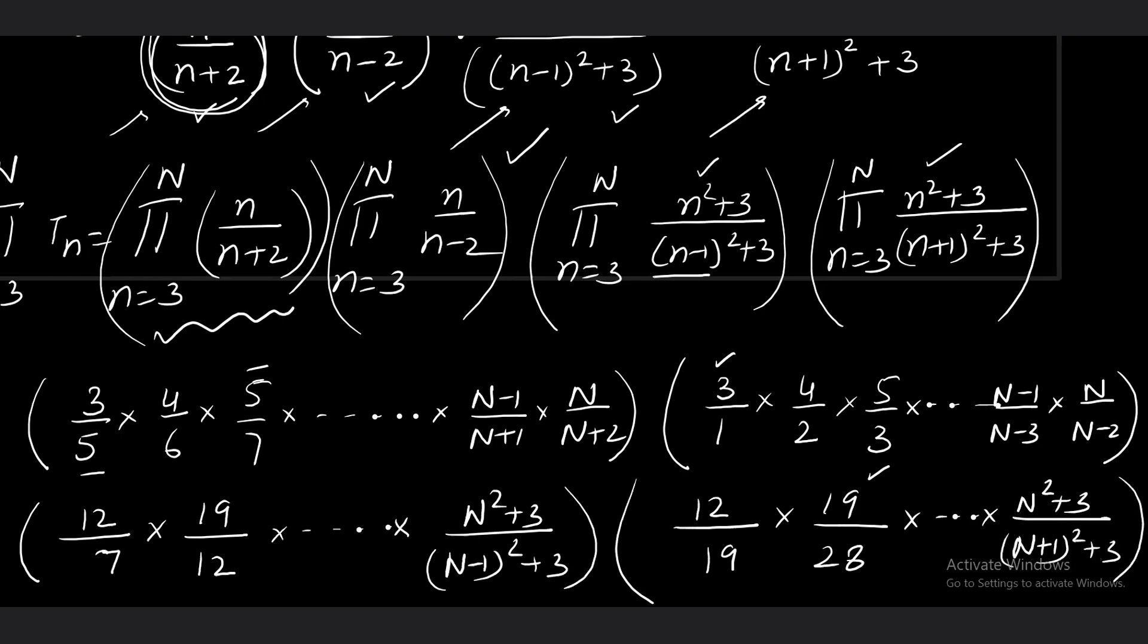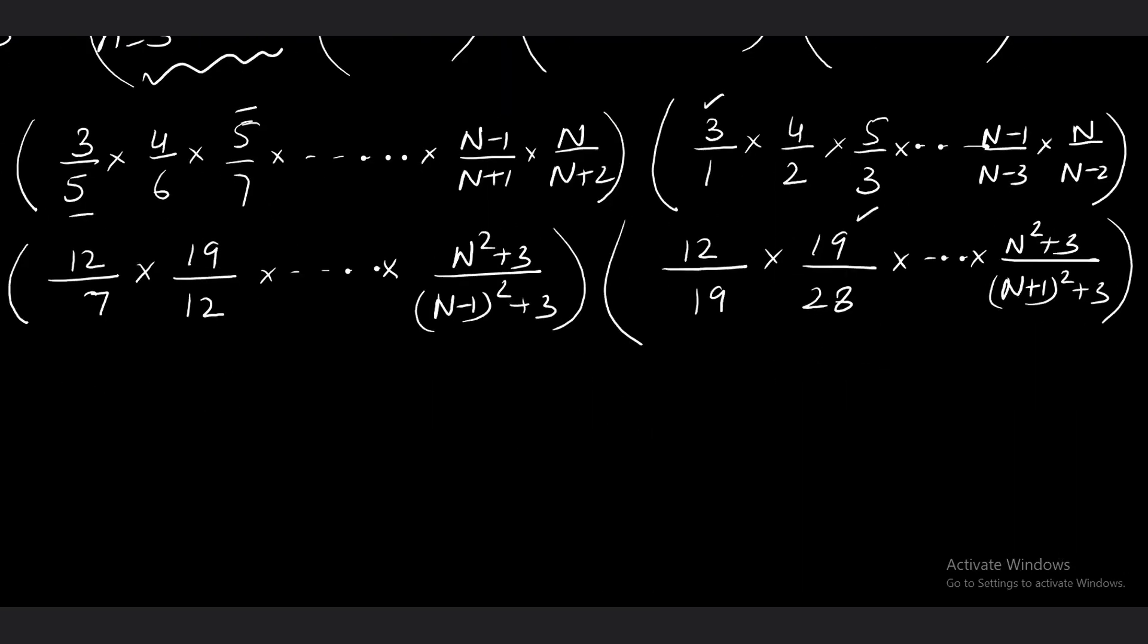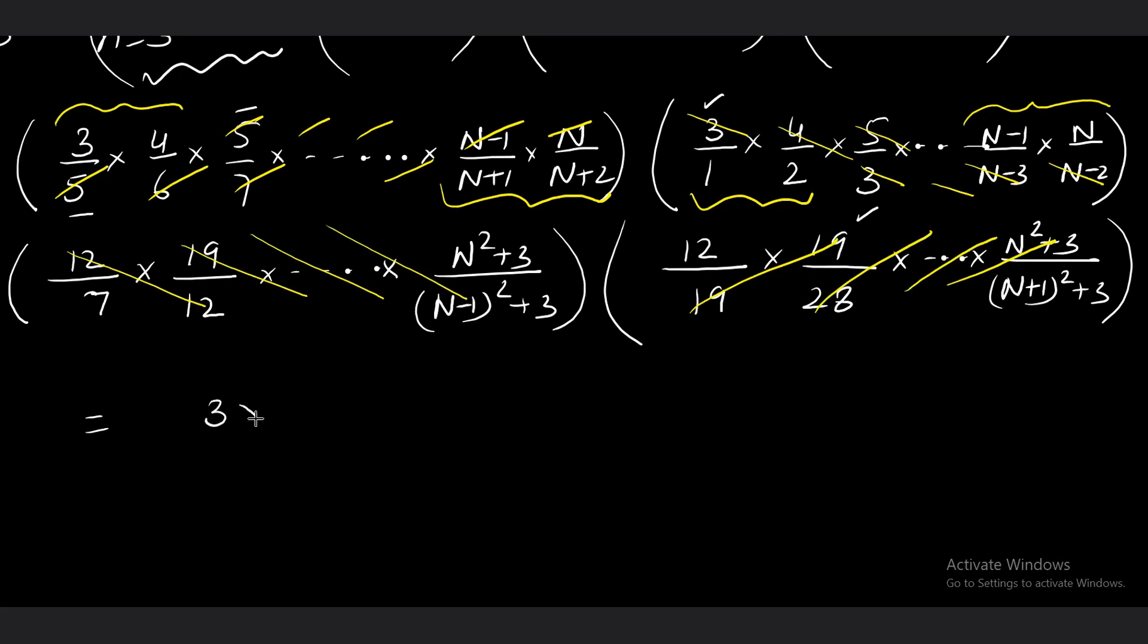Now simplify the continued product. In the first bracket, 5 got cancelled, 6 cancelled and so on till the last term. The last 2 and first 2 terms remain. You will be left with denominator 2 factors and numerator's last 2 factors. Here the terms get cancelled from the second term onwards.